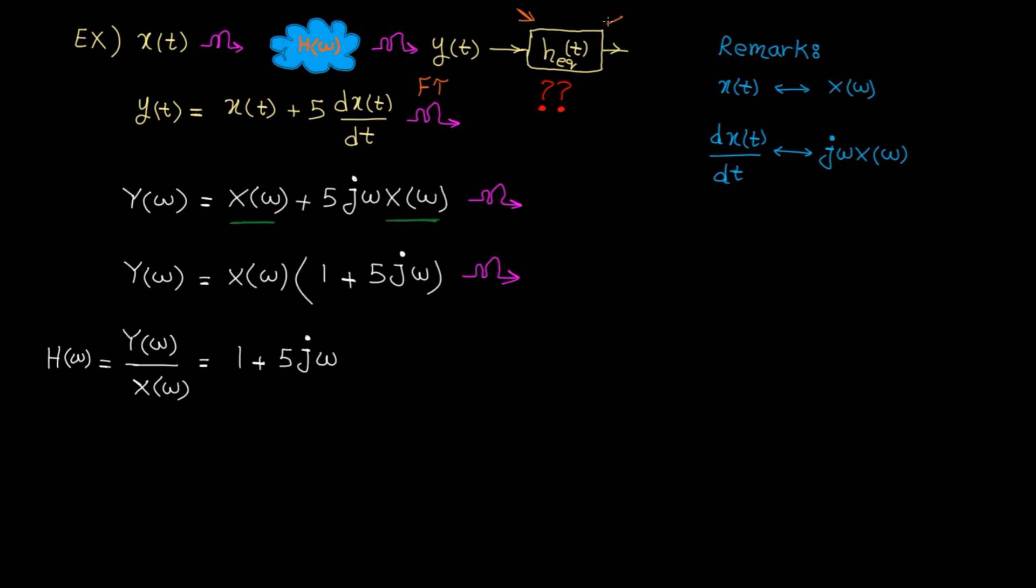To do the equalization, the frequency response of H_EQ must be the inverse of the channel. So let's apply the inverse. Now we are interested to find h_eq(t). That's why we need to travel back to the time domain using inverse Fourier transform.